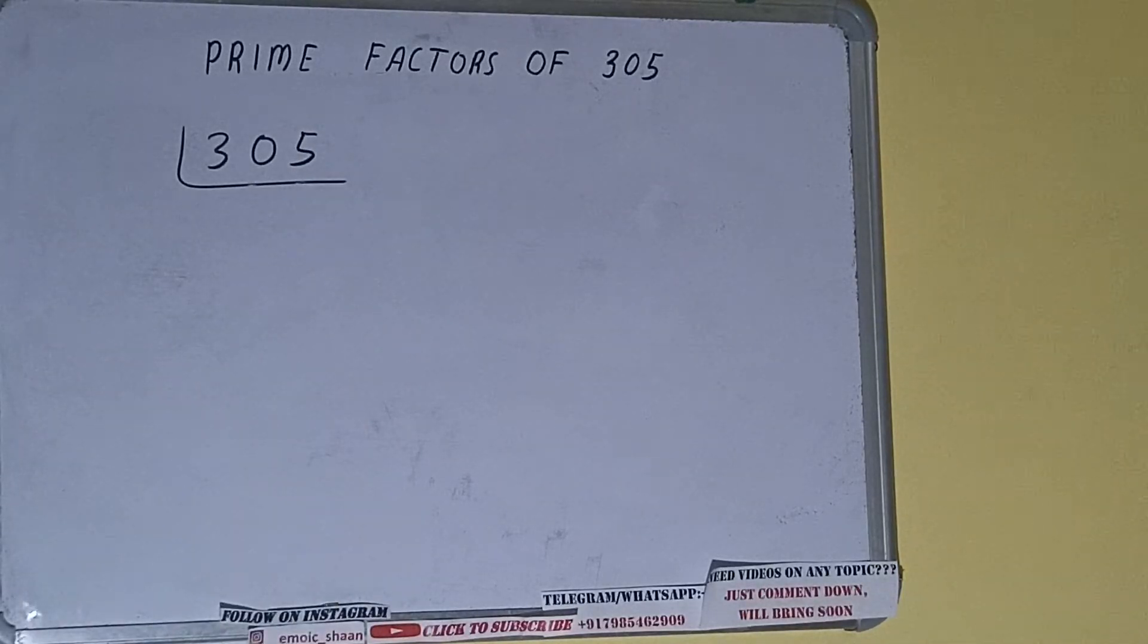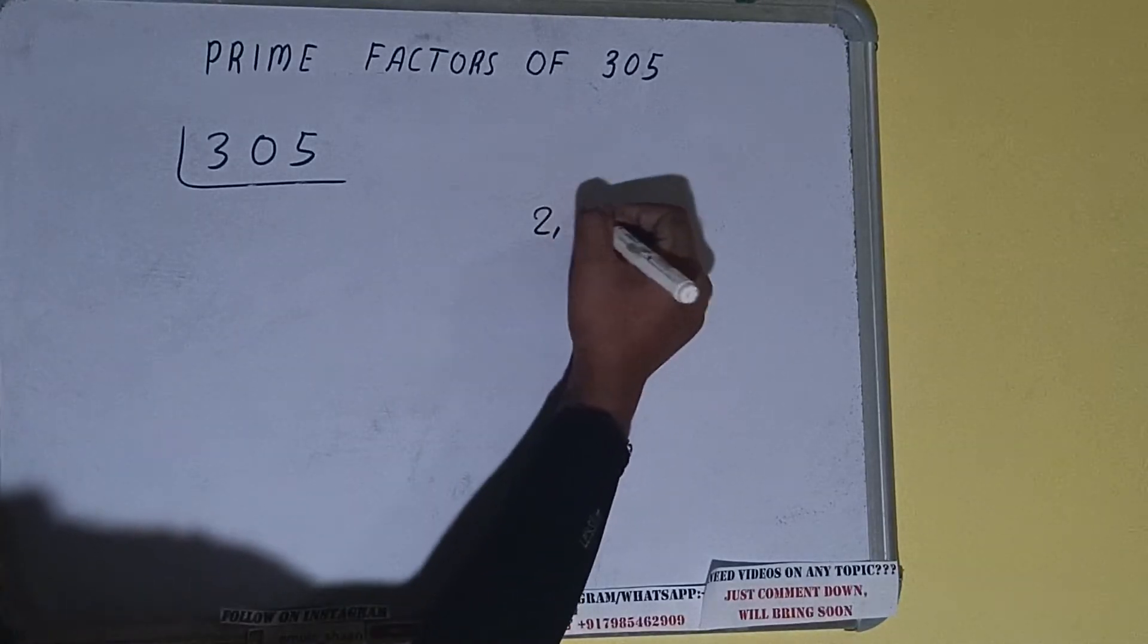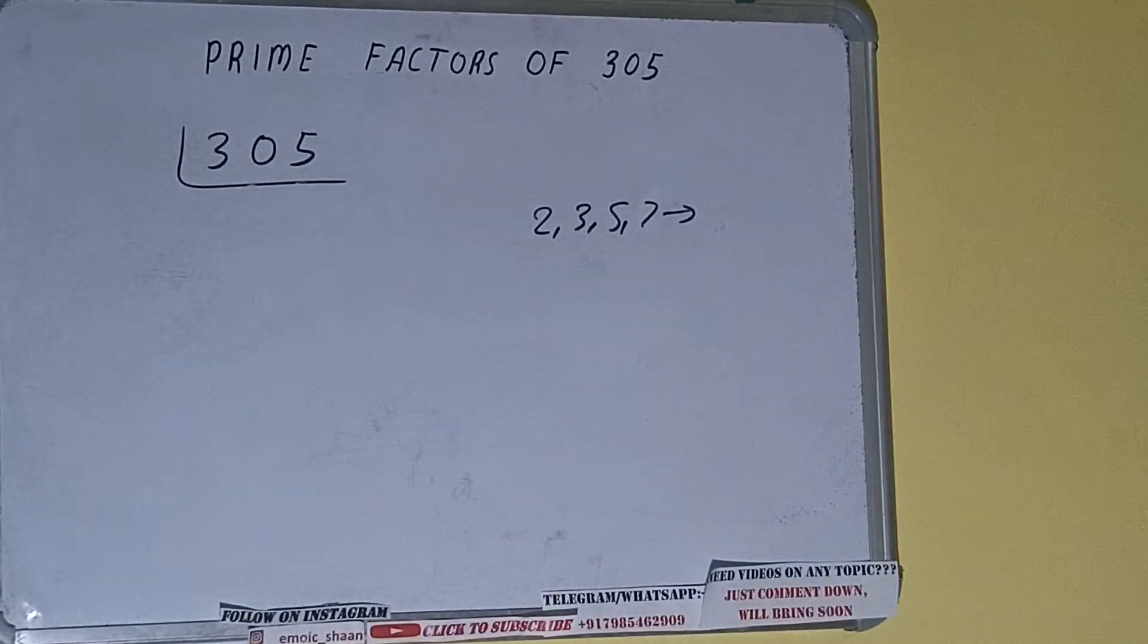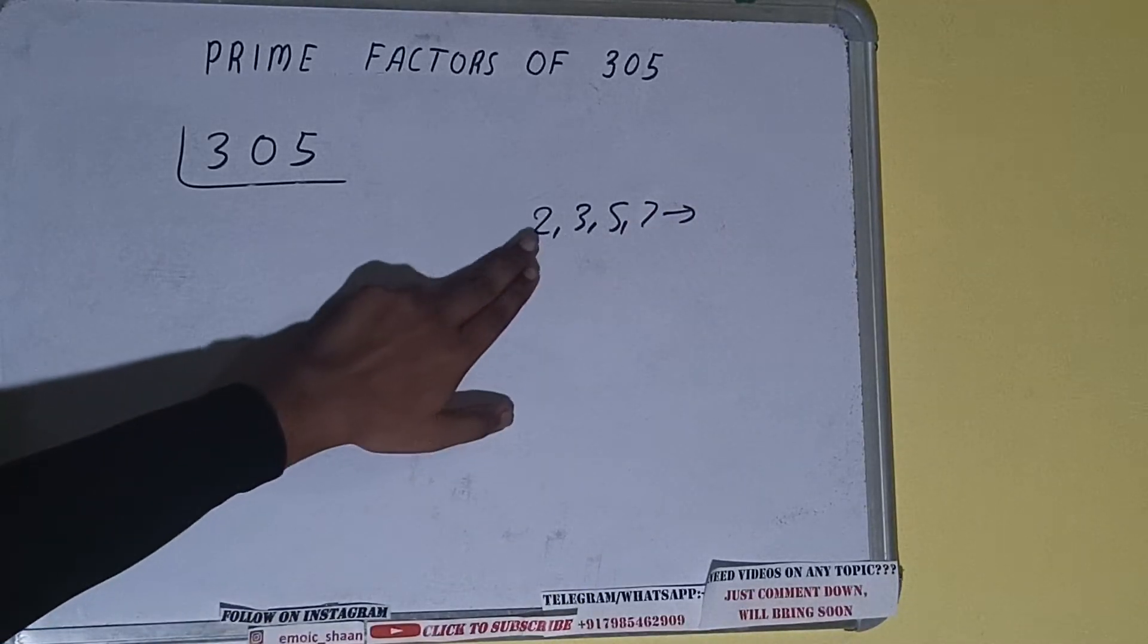The next thing we need to know about is what are prime numbers. Prime numbers are numbers that are divisible by 1 and the number itself, like 2, 3, 5, 7, and so on. We'll check with the lowest prime number we have, that is 2.